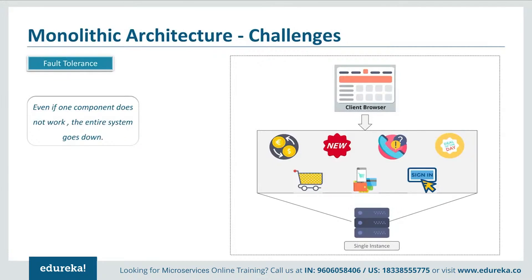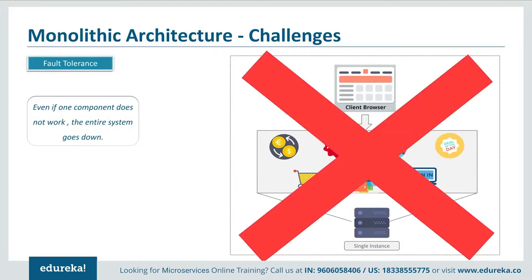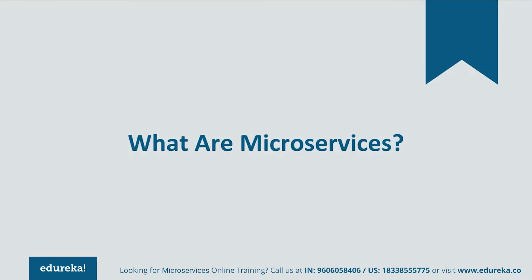The third challenge is fault tolerance. In the shopping cart application, if even one feature doesn't work, the entire system goes down. This creates a problem not only for users but also for developers, who have to rebuild the entire application again. To avoid these challenges, developers decided to shift from monolithic architecture to microservices.